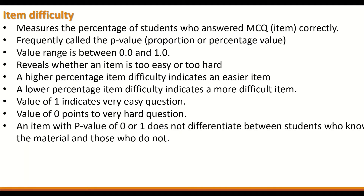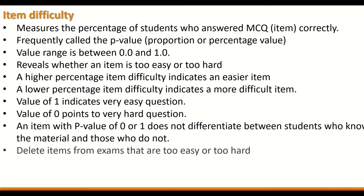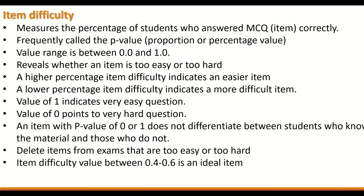An item with a p-value of 0 or 1 does not differentiate between students who know the subject material and those who do not. In this case, if you have an item difficulty of 0 or 1, delete that item from the exam, as items that are either too easy or too hard should be removed. An ideal question has an item difficulty value between 0.4 and 0.6.